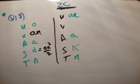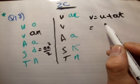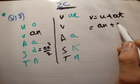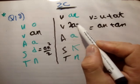So, what do we do? We repeat the process. v is equal to u plus at is equal to an plus an is equal to 2 times an. Is that correct? Yeah. That's correct.